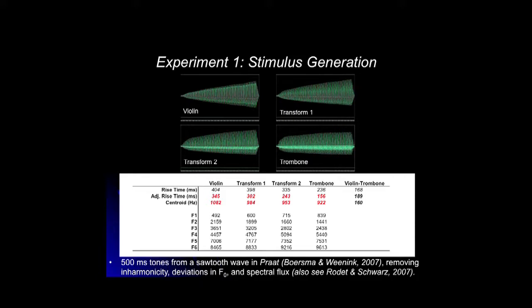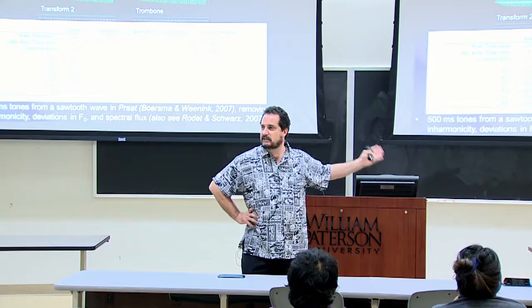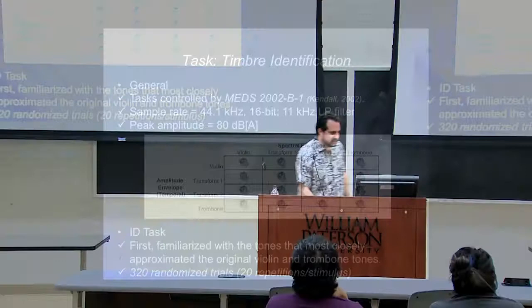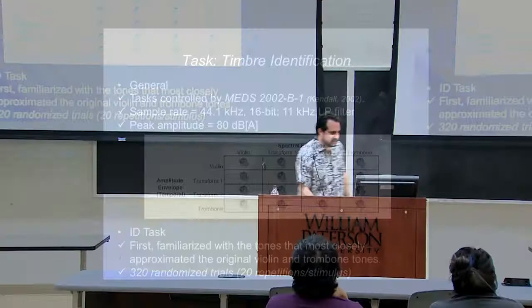This is a computer-controlled operation with 16 total tones. The first task was just identifying what they were — since there are only two instruments it's pretty easy, just telling us if it's a string or brass sound. We familiarized listeners with the endpoints before we began. But there are lots of hybrids in between. It's not going to sound like a beautiful violin because all other sources of variation are gone.